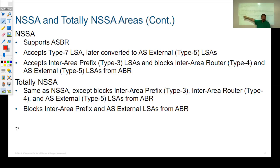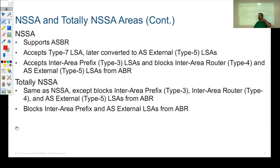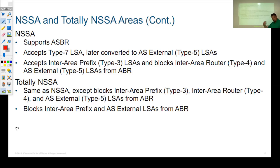Totally NSSA areas block type 3, type 4, and type 5 LSAs: not only external routes (type 5), not only how to reach the ASBR (type 4), but also how to reach every other route in any other area in the OSPF network (type 3). Instead, a default route is sent in. But it still allows for an ASBR in that area, which is the key benefit of having an NSSA area type.